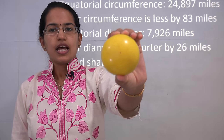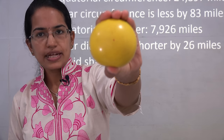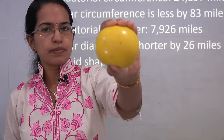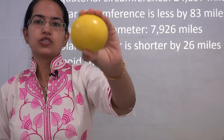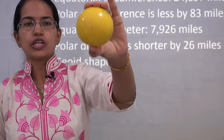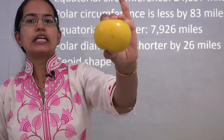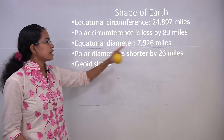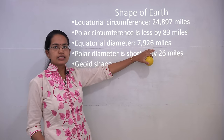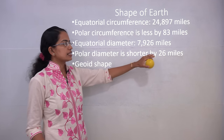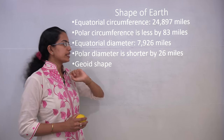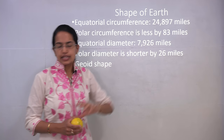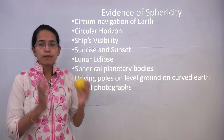To demonstrate Earth's shape, imagine compressing a sphere from two edges — the shape gets deformed into what is known as a geoid or oblate spheroid, with flatter poles and a bulging equatorial region. The equatorial diameter is nearly 7,926 miles, and the polar diameter is less than the equatorial by 26 miles. The polar circumference is also less by 83 miles.